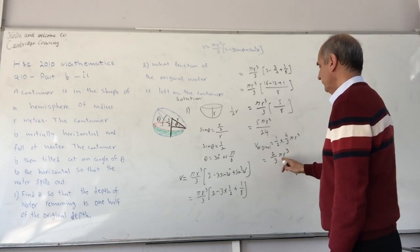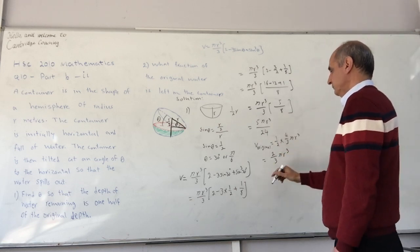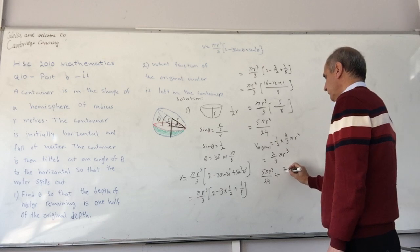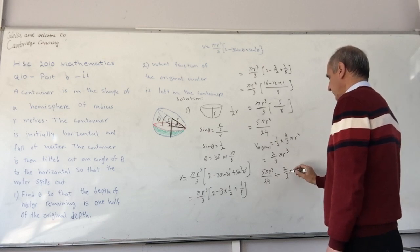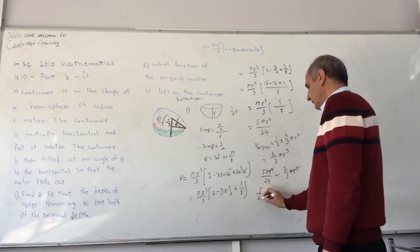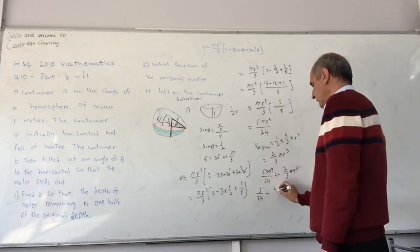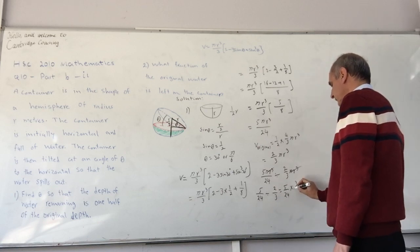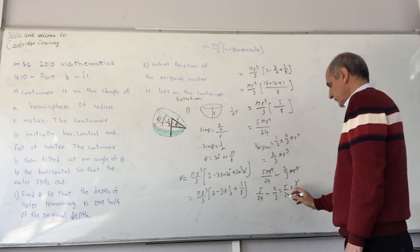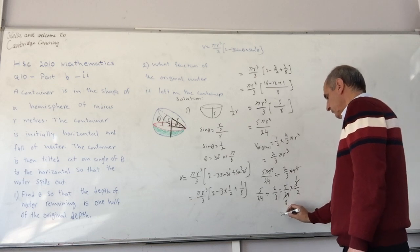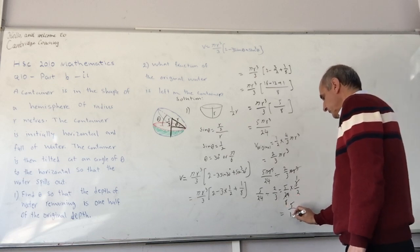So we want to see what fraction is this, of that. Divide that by that, 5 pi r cubed on 24 divided by 2 third pi r cubed. Pi r cubed and pi r cubed cancels out, we have 5 on 24 divided by 2 third, which is 5 on 24, flip the second one and times, and 3 and 24 cancel, which comes 8 and 1, so we end up with 5 on 16.